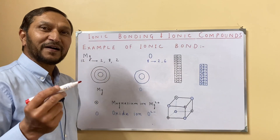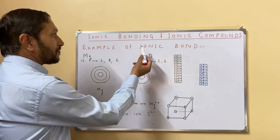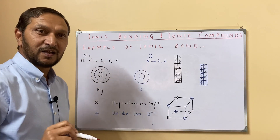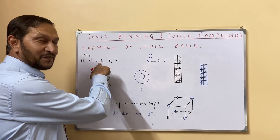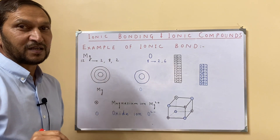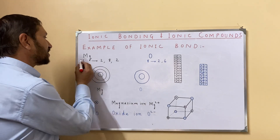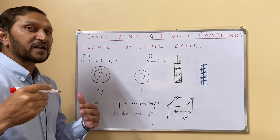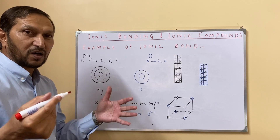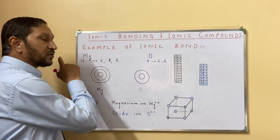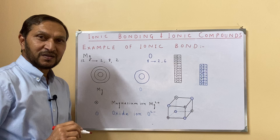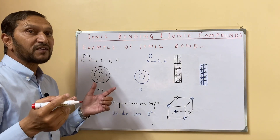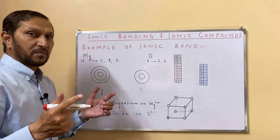Let me elaborate on ionic bonding through an example. I am giving an example of magnesium and oxygen, where magnesium is a metal and oxygen is a non-metal. The proton number of magnesium is 12, and its electronic configuration — the arrangement of electrons in the orbits — is as follows. Since the proton number of magnesium is 12, it will have 12 protons and 12 electrons.